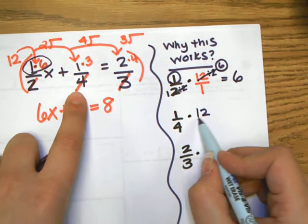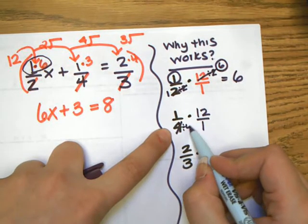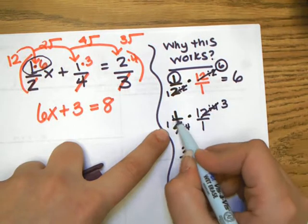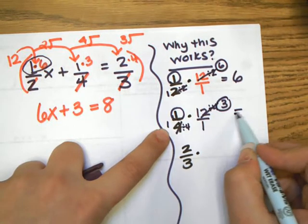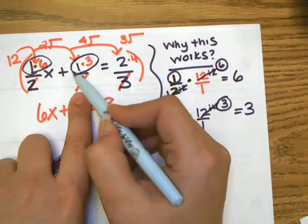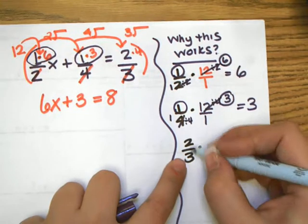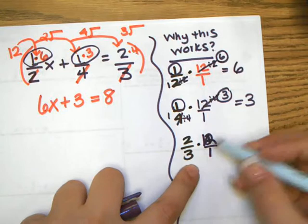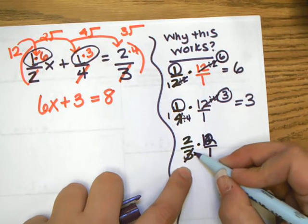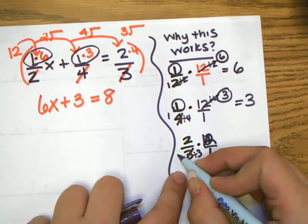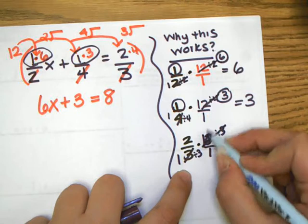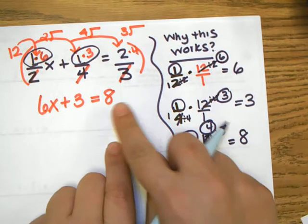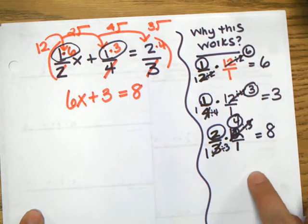When we do 1/4 times 12, same thing. 4 goes into 4 once and it goes into 12 three times. So 1 times 3 is 3. That's where we get this from. Then 2/3 times 12, 3 goes into 3 once and it goes into 12 four times. So 4 times 2 is 8. That's where the 8 came from.